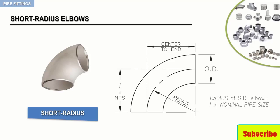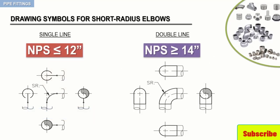Finally, the drawing symbols for short radius elbows are seen here for both single and double line. Notice here that any time a short radius elbow is used, the abbreviated node SR must be placed adjacent to the drawing symbol as depicted in these examples.